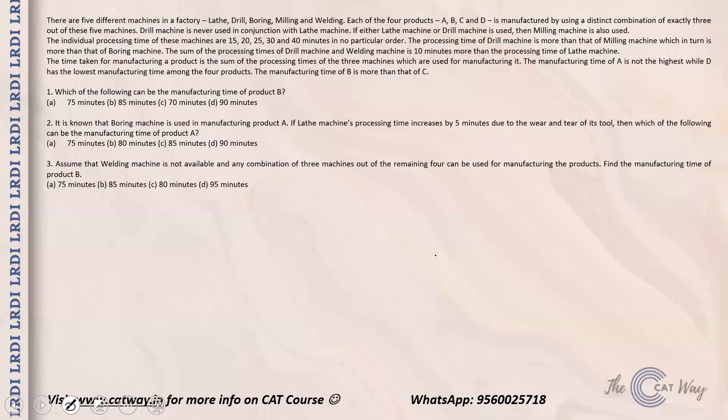The question says there are five different machines in a factory: L, D, B, M, and W. Each of the four products A, B, C, D is manufactured using a distinct combination of exactly three out of these five machines. The drill machine is never used in conjunction with the lathe machine, and if either the L machine or D machine is used, then the M machine is also used. The individual processing times are 15, 20, 25, 30, and 40 minutes in no particular order. The processing time of drill is more than that of milling, which in turn is more than that of boring, and the sum of processing times of drill and welding is 10 minutes more than that of the lathe machine.